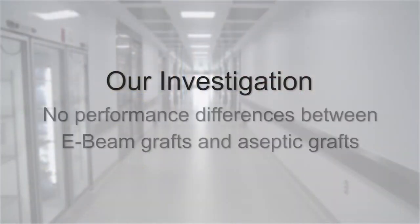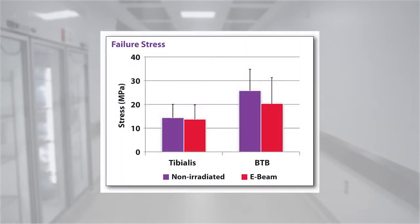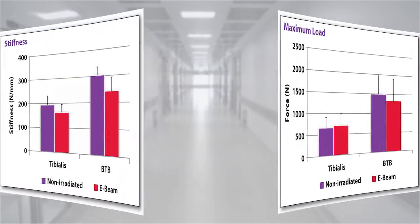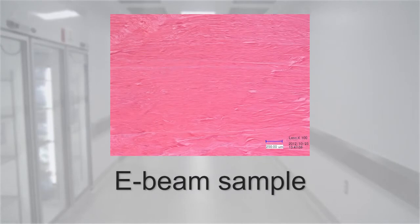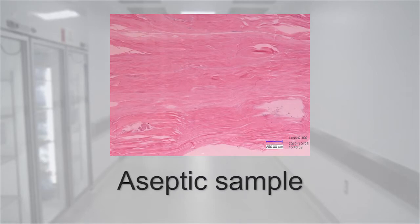And we found overall that there were no differences between the electron beam sterilized grafts and aseptic grafts. We also looked at the structure of the collagen using histology, and we found that there were no differences in collagen fiber alignment, spacing, or diameter between the electron beam sterilized tendons and the aseptic tendons.